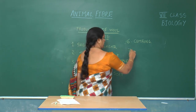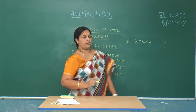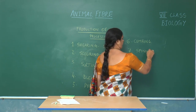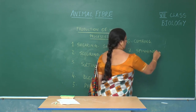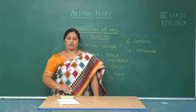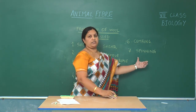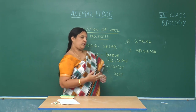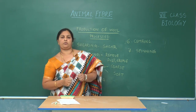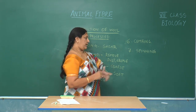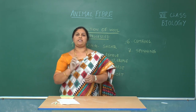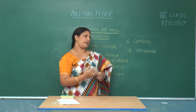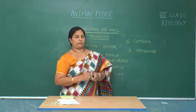Then, the hair is sent to the spinning units, which is the next step. Here, the machine rolls and pulls the hair into a thick rope, and further it is twisted and pulled into yarn. In the spinning unit, the machine rolls and pulls the fibre into a thick rope, and further subjects it to twisting and pulling into a yarn.